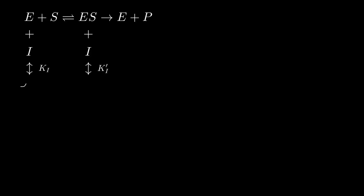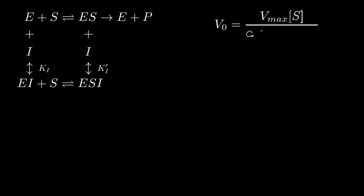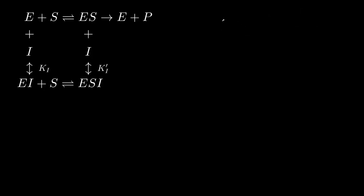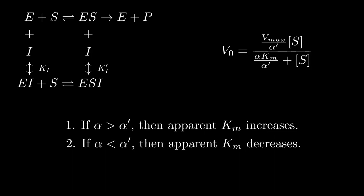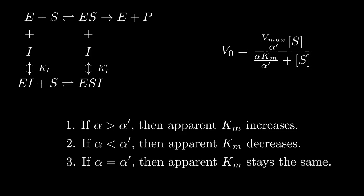Mixed inhibition, as the name suggests, contains both competitive and uncompetitive inhibition. The reaction scheme then becomes this. Mixed inhibition modifies the MM equation to look like this — it is simply a combination of the MM equation for competitive and uncompetitive inhibition. Using a similar adjustment method used for uncompetitive inhibition, we realize that as we increase the concentrations of inhibitors — both competitive and uncompetitive ones — apparent Vmax will decrease. Apparent Km, on the other hand, depends on the values of alpha and alpha prime. If alpha is larger than alpha prime, apparent Km will increase. If alpha is less than alpha prime, apparent Km will decrease. If alpha is equal to alpha prime, apparent Km will stay the same.